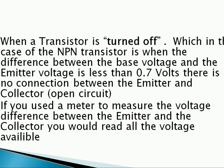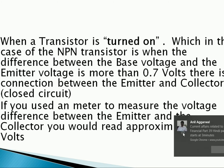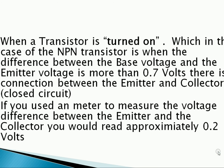When a transistor is turned off — in the case of an NPN transistor, when the difference between the base voltage and the emitter voltage is less than 0.7 volts — there is no current flow between the emitter and collector. That means it is an open circuit, and if we use a meter to measure the voltage difference between the emitter and collector, we can see all the voltage available. When the transistor is turned on and the difference between the base voltage and the emitter voltage is more than 0.7 volts, there is a connection between the emitter and collector — that is the closed circuit — and if we measure the voltage difference between the emitter and collector, we will get approximately 0.2 volts.